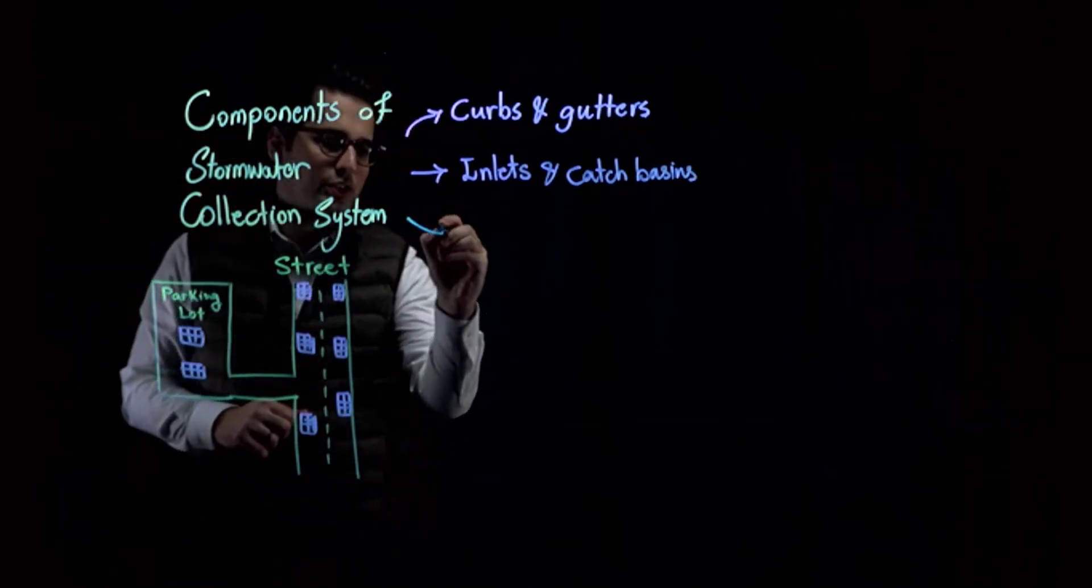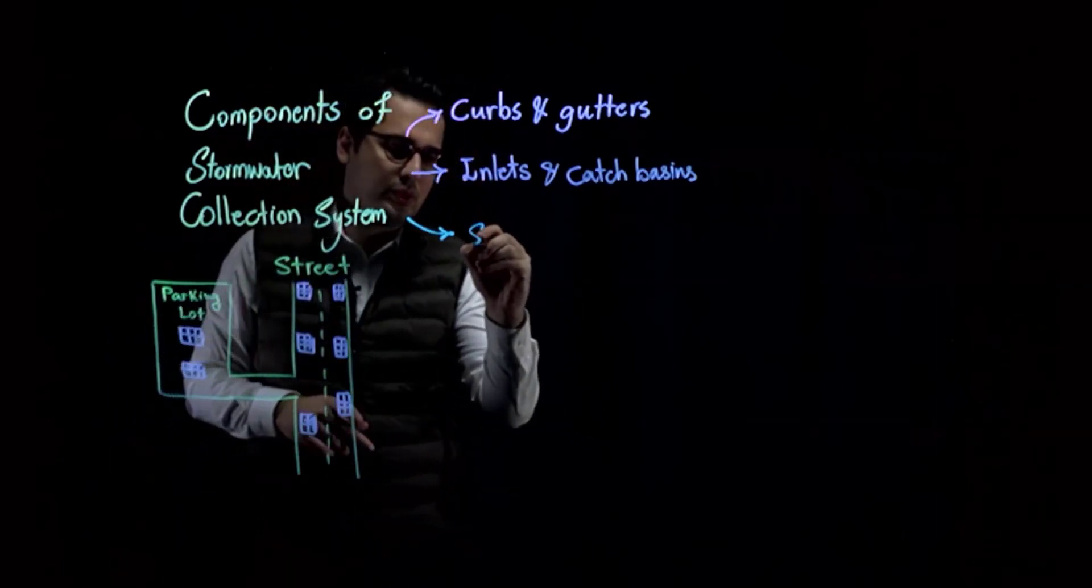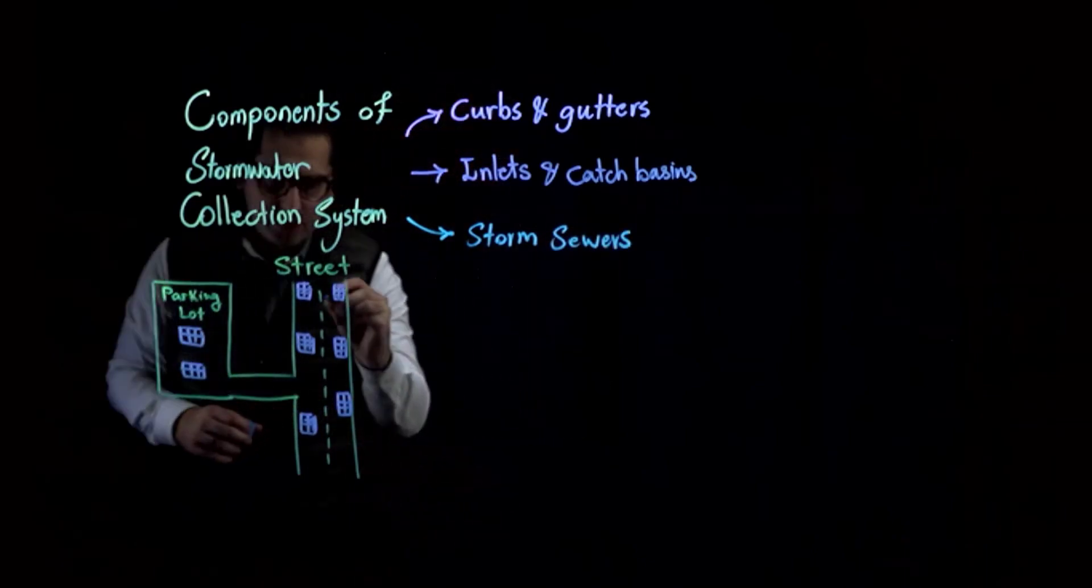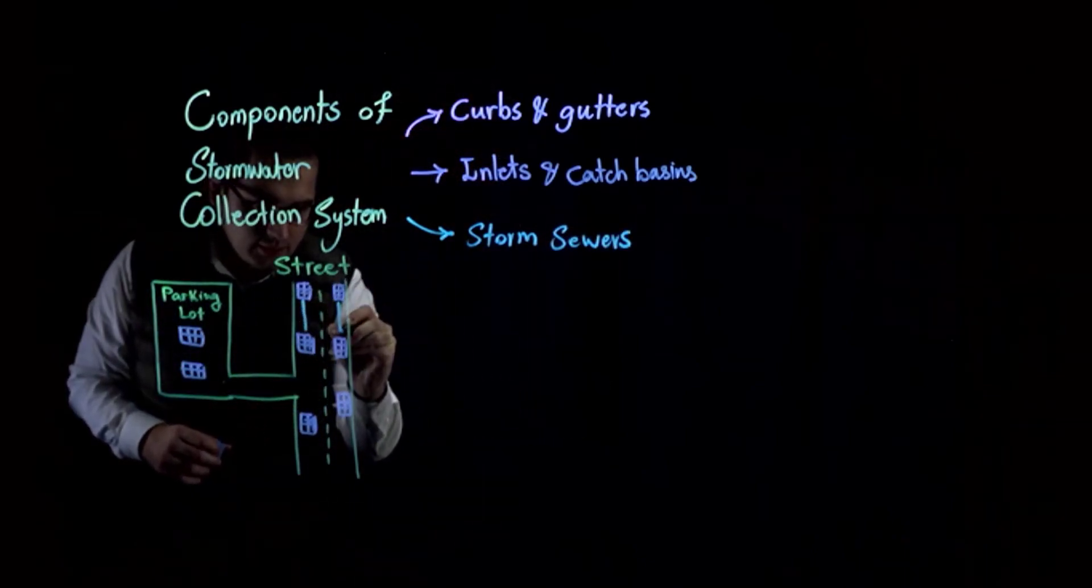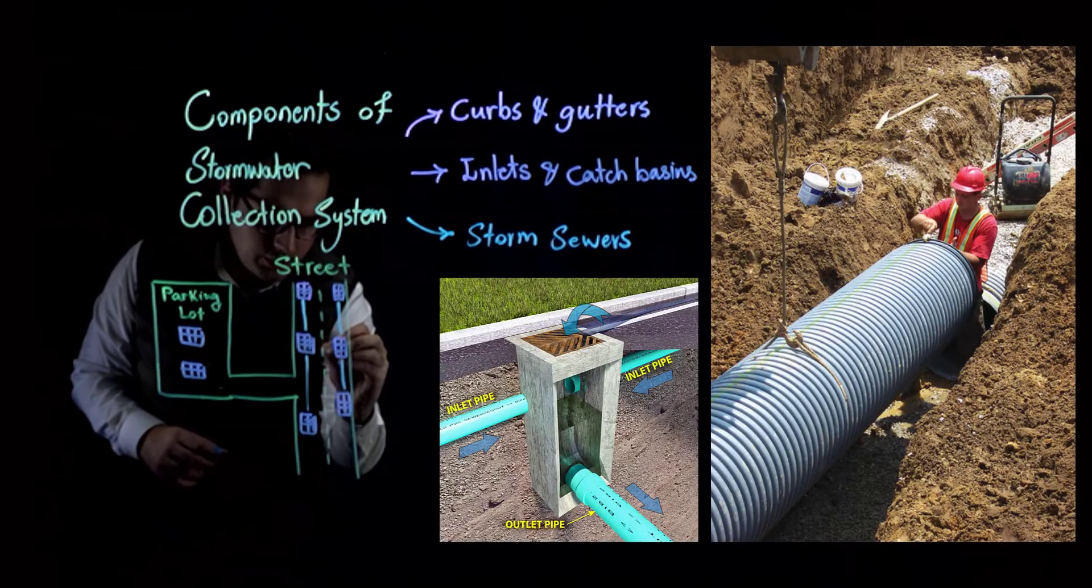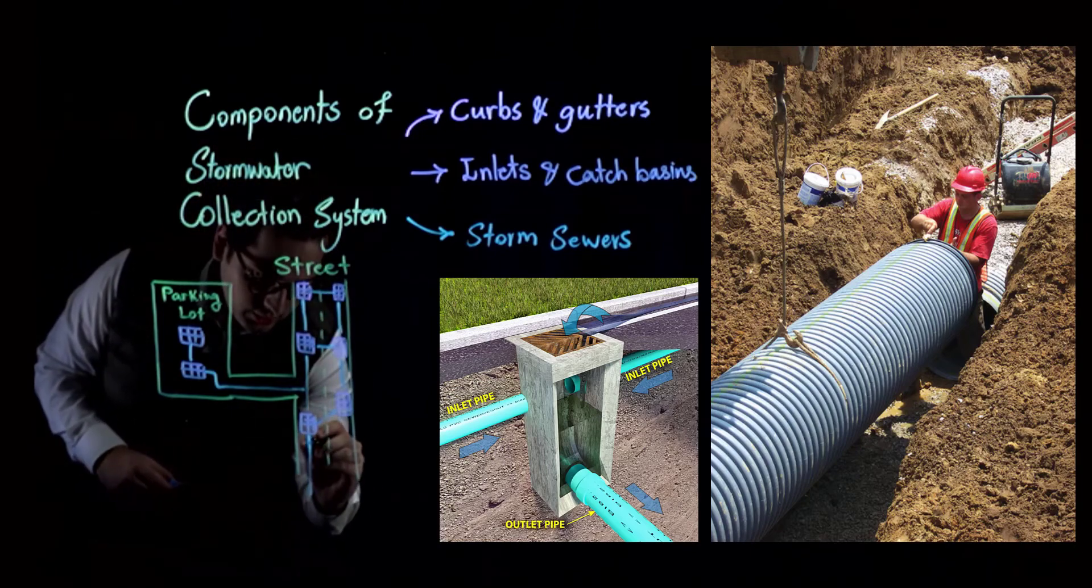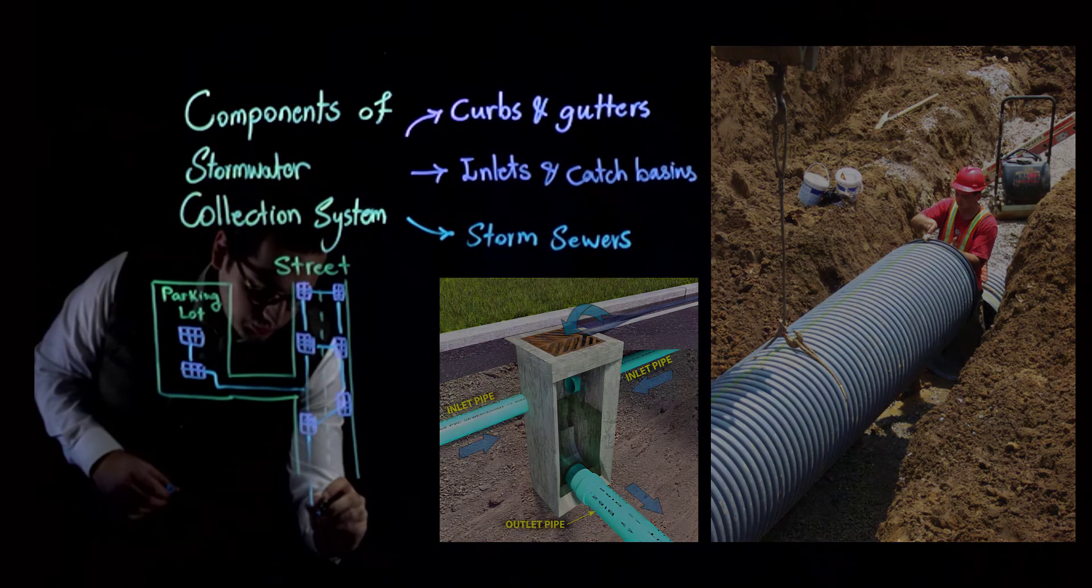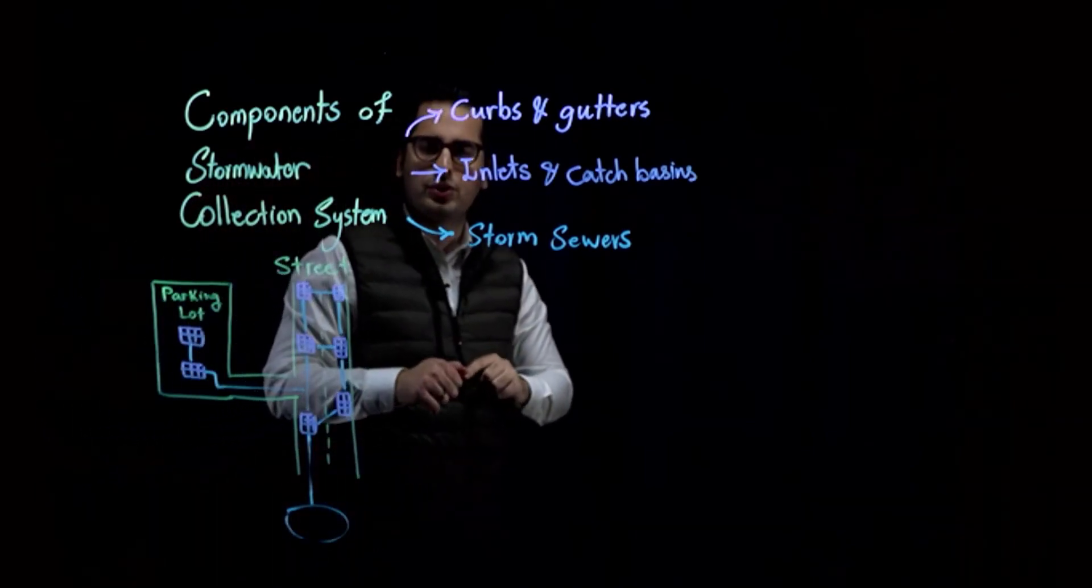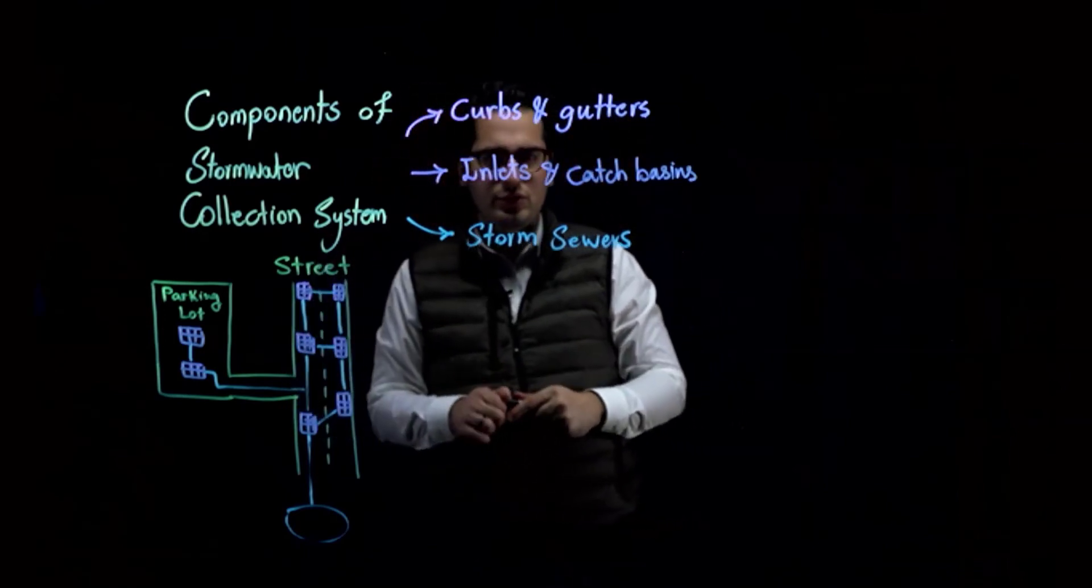And that leads me to the next part of stormwater collection systems, which is going to be storm sewers. Storm sewers are pipes that connect these catch basins to each other like this. And then eventually this storm sewer is going to be connected to a body of water. It could be a river or it could be a wetland, a detention basin, a retention basin, so on and so forth.